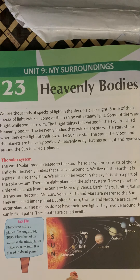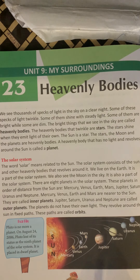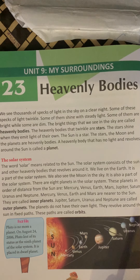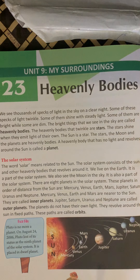I will tell you one more thing. When I was a kid, your age, maine kya padha tha? That there were nine planets. How many planets were there? Nine planets. Ek aur planet tha, jiska naam tha Pluto. Kya naam tha? Pluto. Lekin ab usko hata diya gaya hai solar system se. Why? Kyunki woh bahut chhota hai.